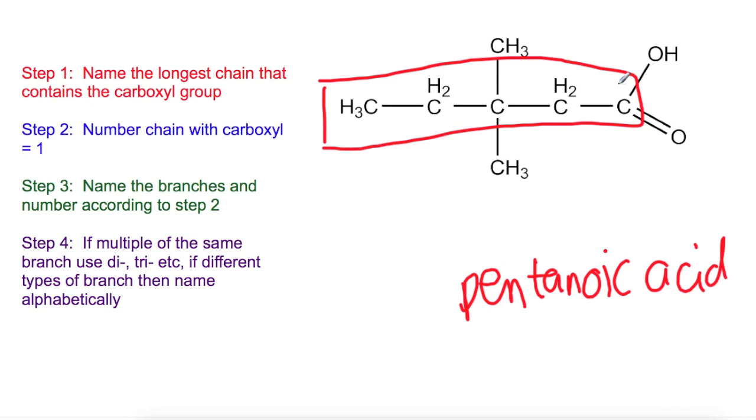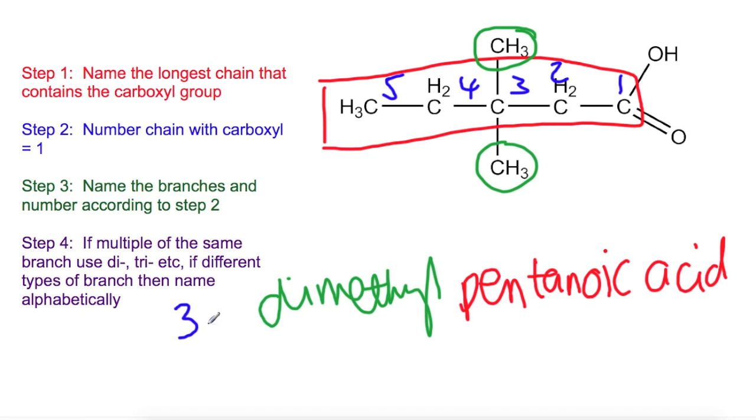We're then going to number the chain from the end where we have the carboxyl group. So we have 1, 2, 3, 4, 5. And this allows us to look at our two branches. We've got two branches here that are identical, both methyls. So we're going to have dimethyl. But we need to specify where each of them are on the chain. So they're both on number 3. And because we have a di that means you need to include two numbers. So just because the numbers are the same doesn't mean you just write it down once. So we have 3, 3-dimethylpentanoic acid.